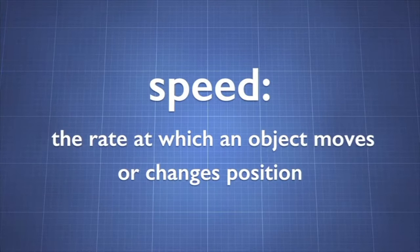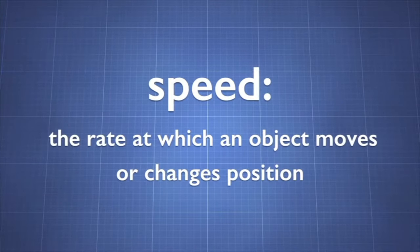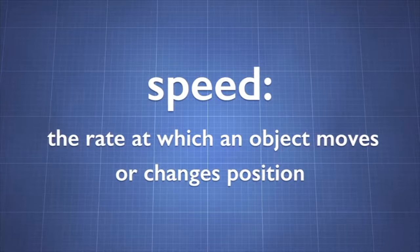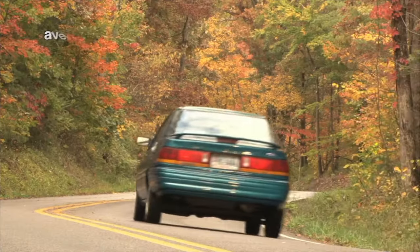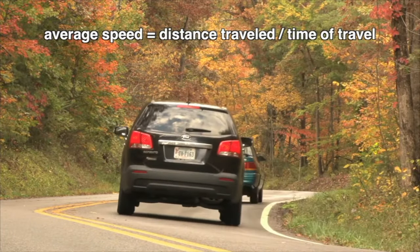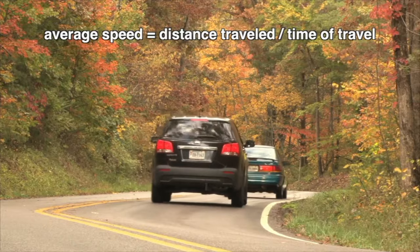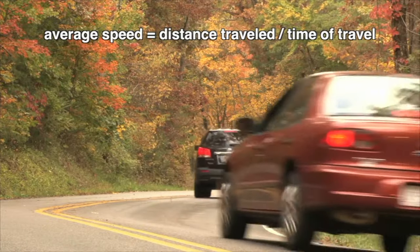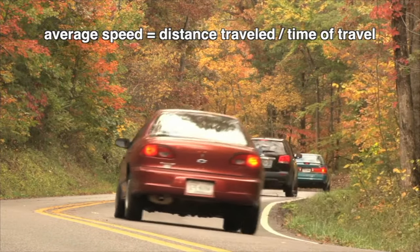Speed is the rate at which an object moves or changes position. To calculate the average speed of an object, divide the distance it travels by the time to travel the distance.